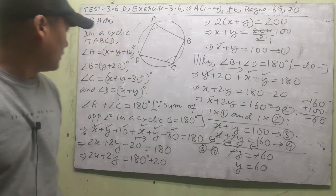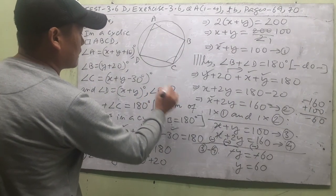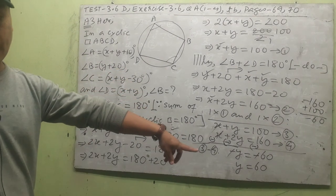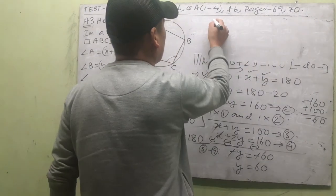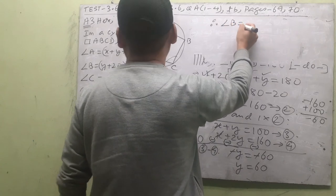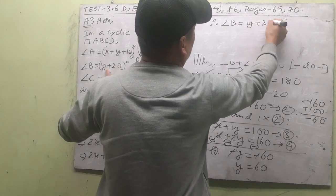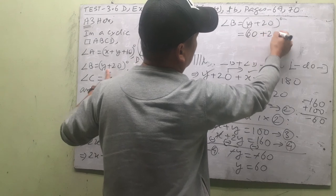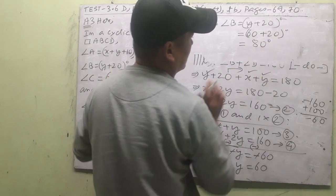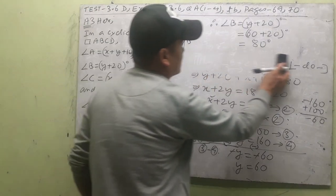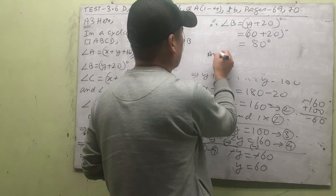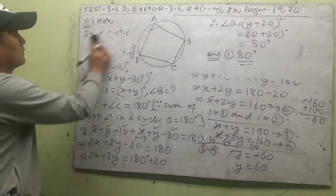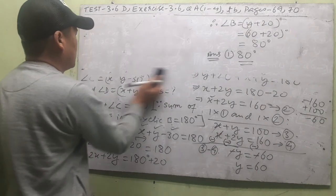The question asks for angle B. Since angle B = y + 20 and y = 60: angle B = 60 + 20 = 80°. Checking the answer choices, choice number 1 matches: 80 degrees.